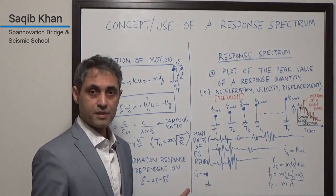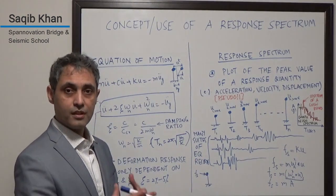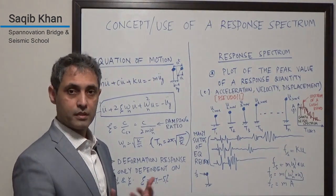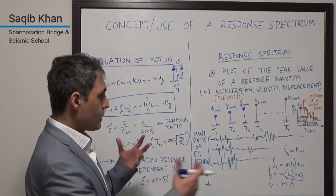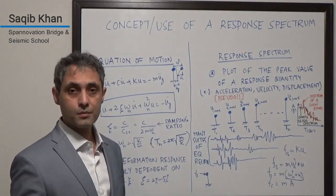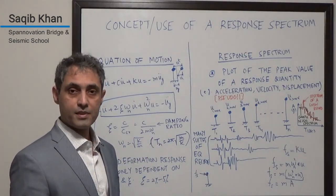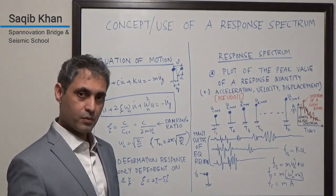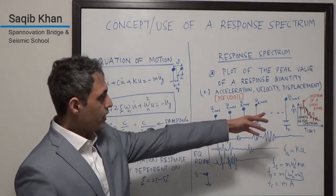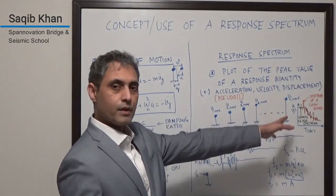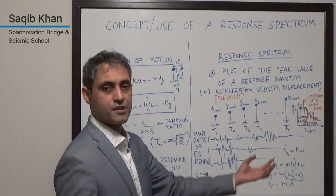A multi-degree of freedom system works in a very similar fashion. We decompose the response into different mode shapes. So now we may have 10 or 15 or 200 mode shapes, which essentially represent different single-degree freedom systems with different time periods.